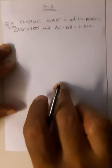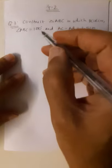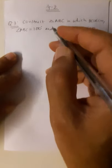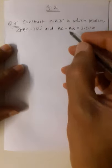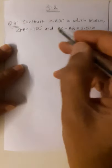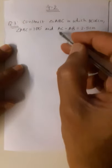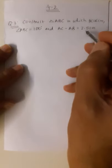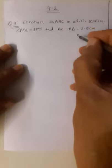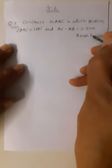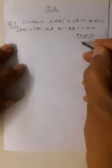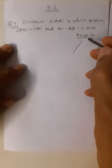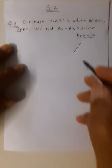Hello students, welcome back. This is the third recorded lecture. Here we are seeing the third sum of Practice Set 4.2. In the last lecture I had discussed what if you know base, one angle at the base, and difference of opposite side minus adjacent side is given. So the rough figure I am drawing — triangle ABC.